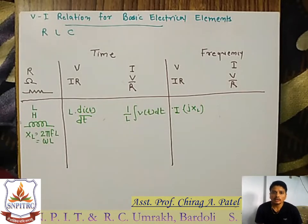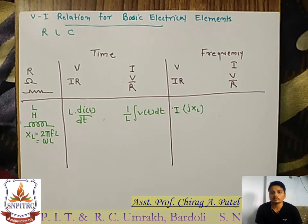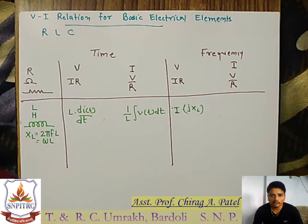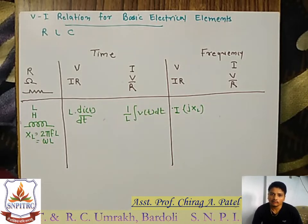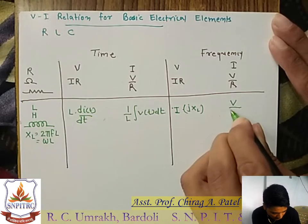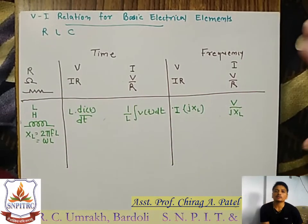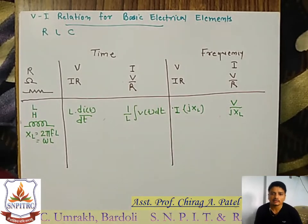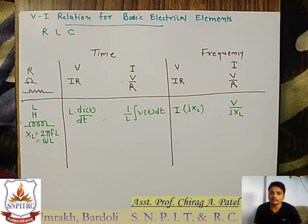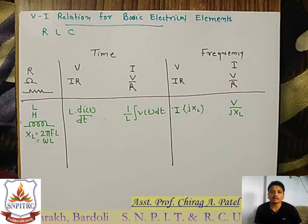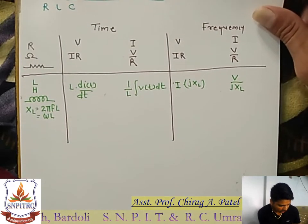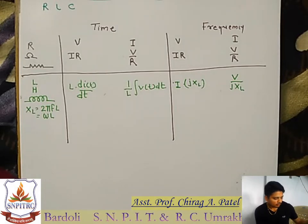We are writing j because it is a reactive quantity — the reactance of the inductance is always seen on the imaginary axis, so we write I into j·XL. Same way, the current through the inductor in frequency domain is equal to V divided by j·XL. Simple equation, same as the resistance, only we write the reactance of the inductor here. And since it is an imaginary quantity, we write j·XL.